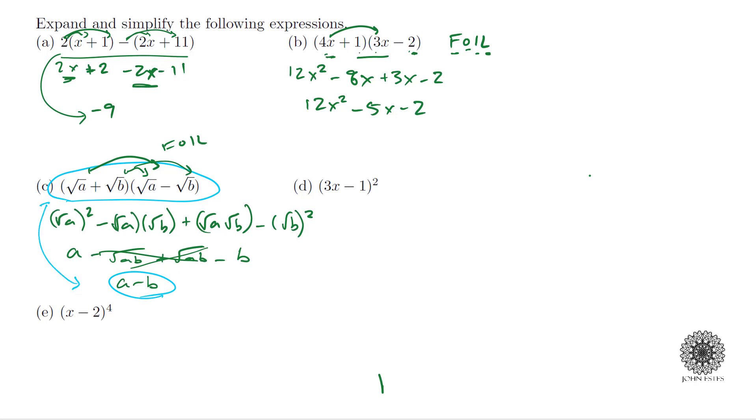All right, thirdly or fourthly, in part D we have 3x minus 1 quantity squared. This is the same thing as saying 3x minus 1 times 3x minus 1, so this again is using the FOIL technique. I multiply the first, end up with 9x squared. The outside I have a negative 3x, the inside I have a negative 3x as well, and then lastly have negative 1 times negative 1 which is a positive 1. So cleaning that up we have 9x squared minus 6x plus 1.